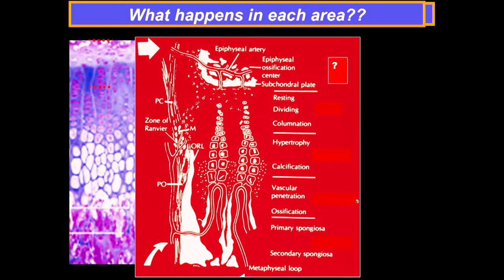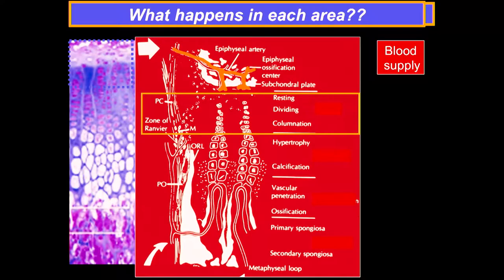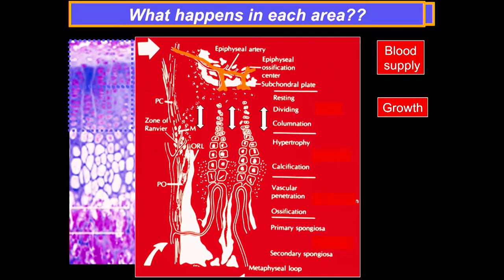That blood supply supports this layer where the cells are growing—the resting cells are supplied through the epiphysis right here. That's very critical. The cells then become hypertrophic because they outgrow their vascular supply and die. The cells have outgrown their vascular supply since it comes from up in the epiphysis, and so the matrix is allowed to calcify.